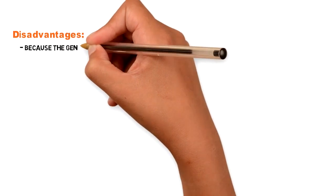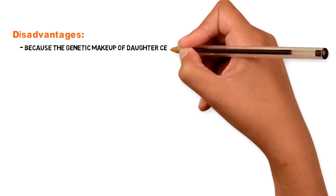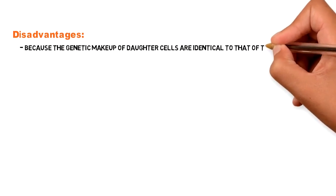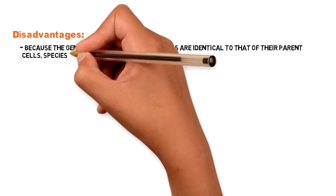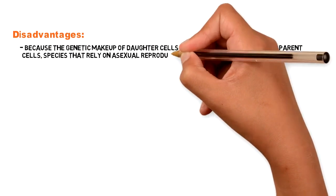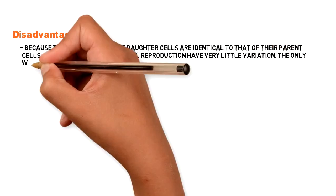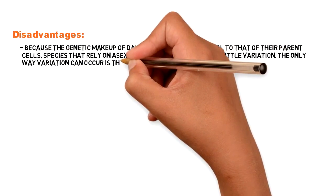Disadvantages. Because the genetic makeup of daughter cells are identical to that of their parent cells, species that rely on asexual reproduction have very little variation. The only way variation can occur is through gene mutations.